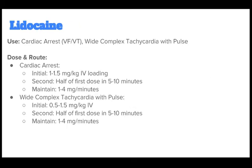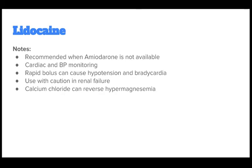Lidocaine should be used for cardiac arrest with a rhythm of VF or VT, and wide-complex tachycardia with pulse. For cardiac arrest, the initial dose is 1-1.5 mg/kg IV loading, then half of the first dose in 5-10 minutes, and maintain 1-4 mg per minute. For wide-complex tachycardia with pulse, the initial dose is 0.5-1.5 mg/kg IV, then half the first dose in 5-10 minutes, then maintain 1-4 mg per minute. Notes: recommended when amiodarone is not available; rapid bolus can cause hypotension and bradycardia; use with caution in renal failure.